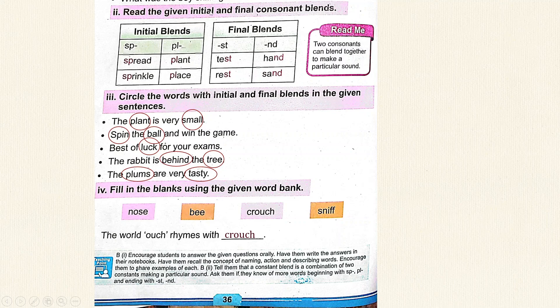Read the given initial and final consonant blends. Read me: Two consonants can blend together to make a particular sound. Initial blends: SP — Spread, Sprinkle. PL — Plant, Place. Final blends: ST — Test, Rest. ND — Hand, Sound.